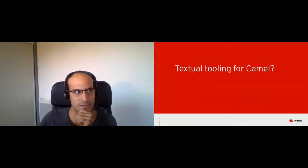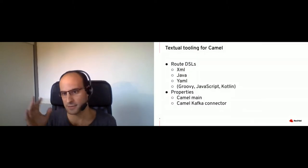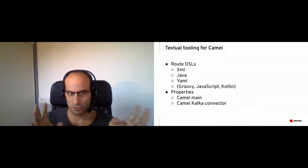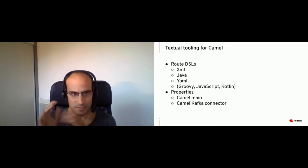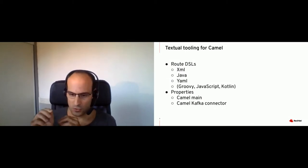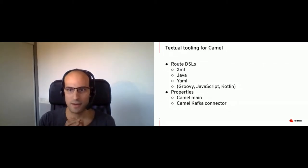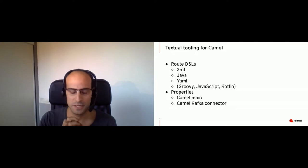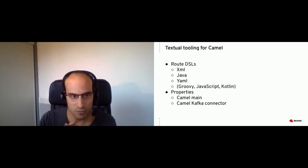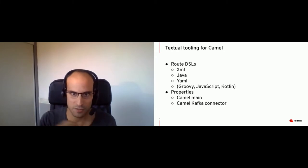First, I will start by defining what I'm talking about when I talk about textual tooling for Camel. There are different kinds of file configuration available in Camel — you have your DSL, your properties files written in different languages. I won't talk about providing tooling for XML tags or Java methods, but I will talk about providing tooling for Camel URIs inside a specific field in XML or Java, or also providing help inside the properties file for Camel-specific properties.